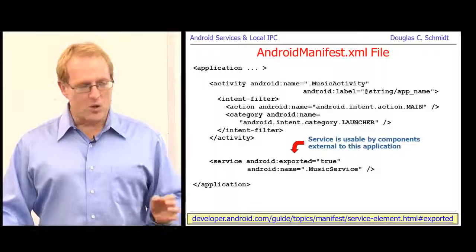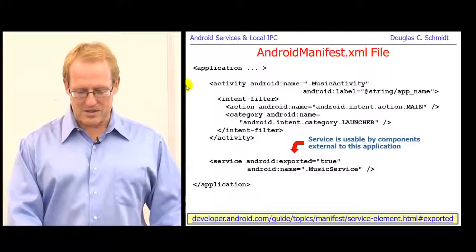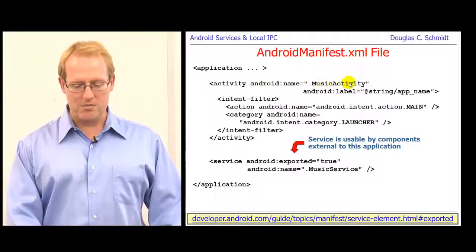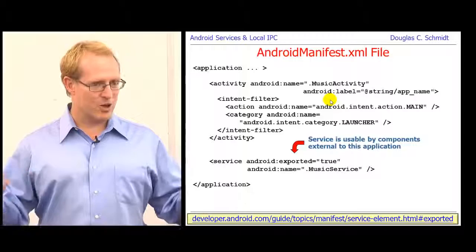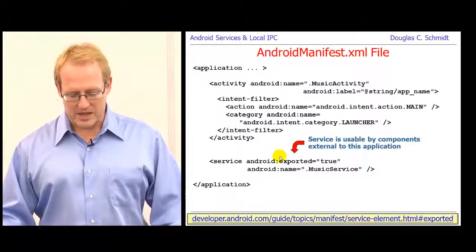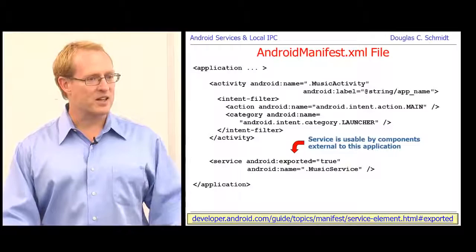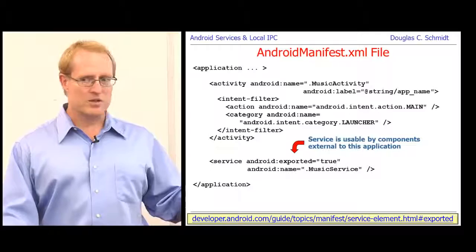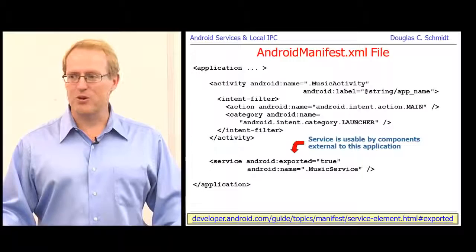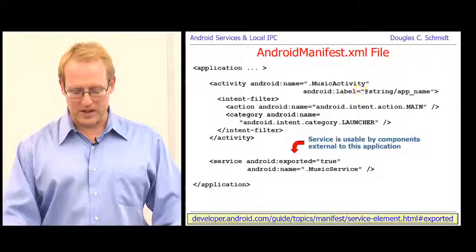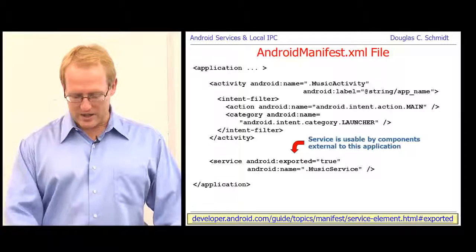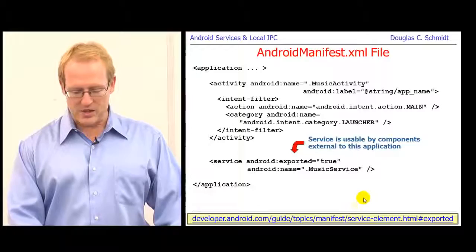Here is the manifest file. It has the familiar activity part — we define an activity, give it a name 'MusicActivity', a label from the strings resource file, and set up a filter for launching it. Down below, we declare the service as exported, meaning it can be accessed by anyone with the right permissions. We give it the name 'MusicService'. If you don't put this entry in, the client activity won't be able to see the service. Don't forget to put that in your services file — when you first play around with this stuff it's easy to forget.